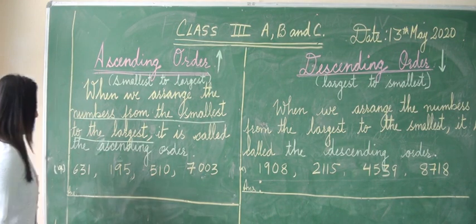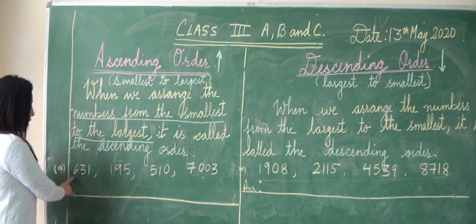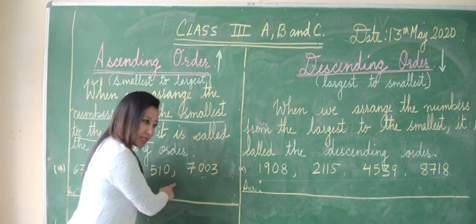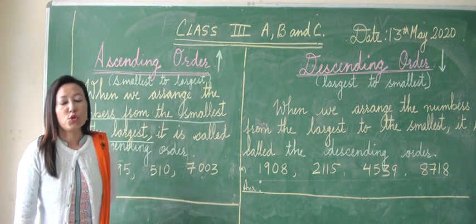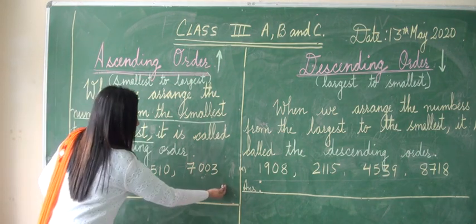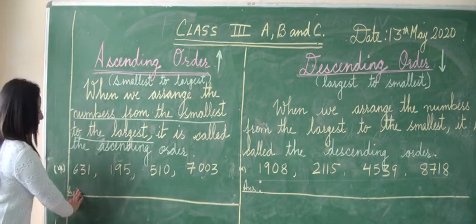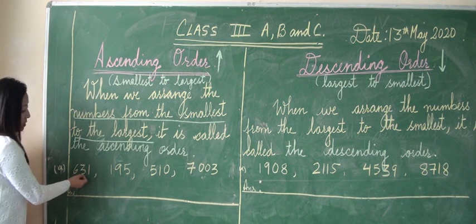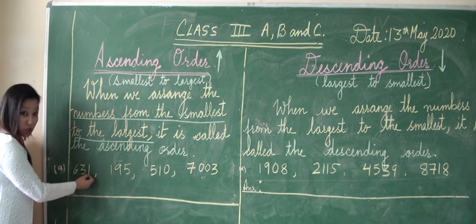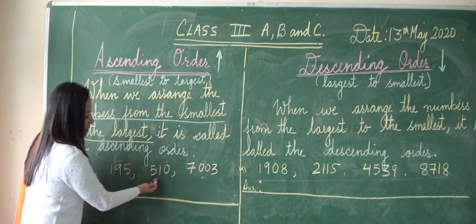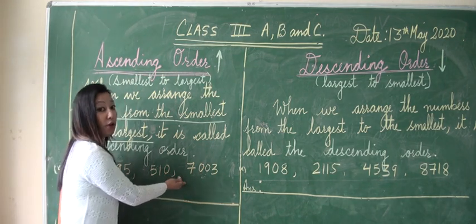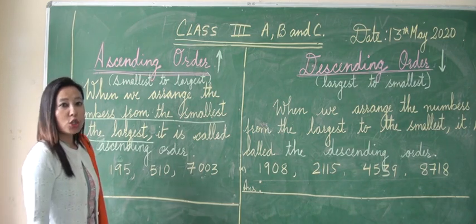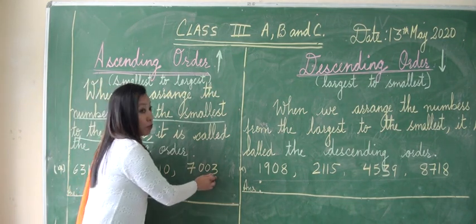Now look at these numbers. We have 300, 631, 195, 510, and 7003. We have to compare these numbers. First, count the digits. Here we have a three-digit number, three-digit number, three-digit number, but here we have a four-digit number. As we all know, four digits is greater than three, so 7003 is the greatest number.